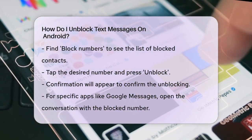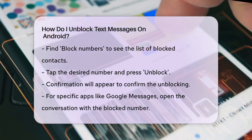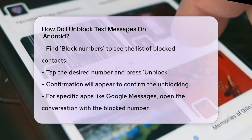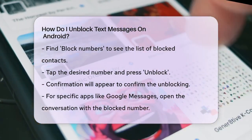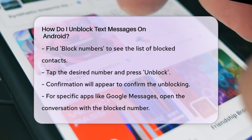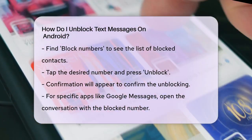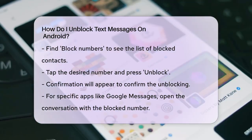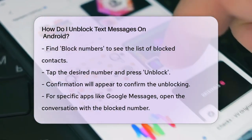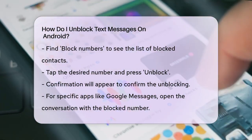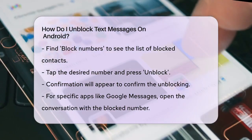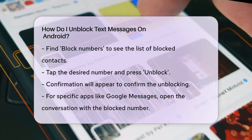If you're using a specific messaging app like Google Messages or Samsung Messages, the process is slightly different but still straightforward. For Google Messages, open the conversation with the blocked number. Tap and hold the message or the sender's name until a menu appears, then select More and tap Block Contact.